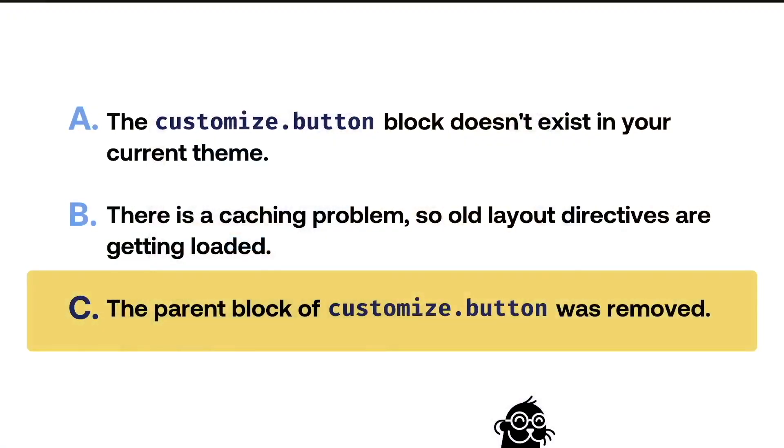The point I want to highlight is making sure we have a complete understanding of what's going on. Looking at that summary, we gain the information we need to make an educated guess as to what is the most likely answer. If some of those parts had been left out of the summary, it could just as likely have been a problem with the theme or with caching. But looking at the full picture and all of the different details, we can make the educated guess — which in my case was correct — that option C is the correct answer: the parent block of customize.button was removed, the child block was not rendered, but it was referenced elsewhere and ended up breaking the site.